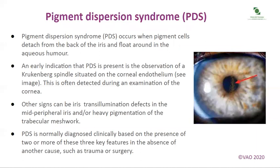Pigment dispersion syndrome, PDS, occurs when pigment cells detach from the back of the iris and float around in the aqueous humour. An early indication that PDS is present is the observation of a Krukenberg spindle situated on the corneal endothelium. This is often detected during an examination of the cornea. Other signs can be iris transillumination defects in the mid-peripheral iris and/or heavy pigmentation of the trabecular meshwork. PDS is normally diagnosed clinically based on the presence of two or more of these three key features in the absence of another cause, such as trauma or surgery.